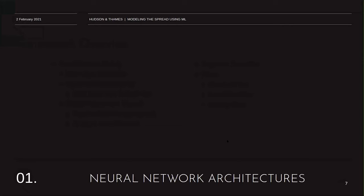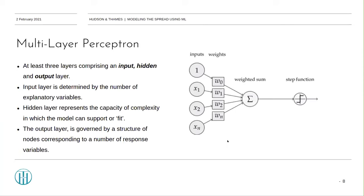Neural network architecture. The first one is the generic multilayer perceptron. It's built with at least three layers, comprising of an input, hidden, and output layer. The structure of the input layer is determined by the number of explanatory variables depicted as nodes in the architecture.